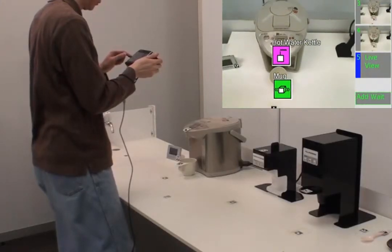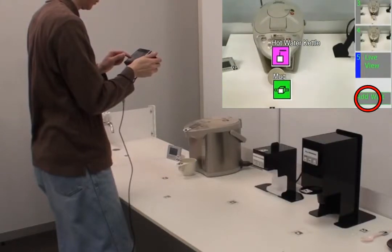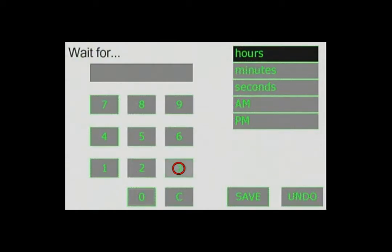We can also instruct the robot directly. For example, the Add Wait button tells the robot to pause before proceeding to the next step. We do not need a photograph for this instruction.